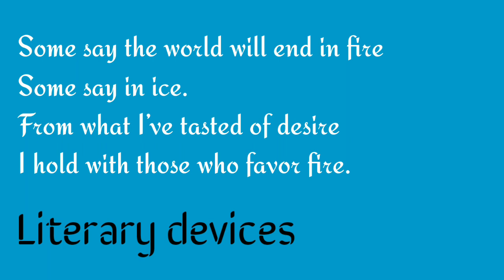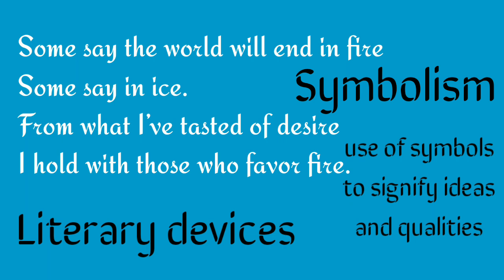The poet has also used symbolism, which is the use of symbols to signify ideas and qualities by giving them symbolic meanings different from their literal sense. For example, fire is used as a symbol of anger, lust, greed and violence, while ice is symbolic of hatred, indifference, apathy and lack of consideration.